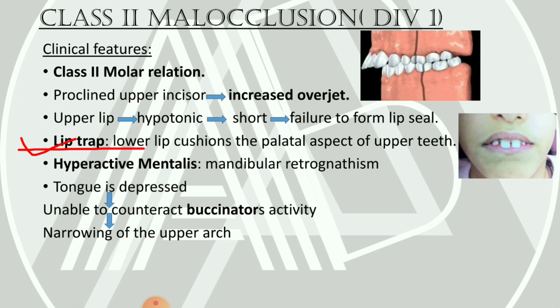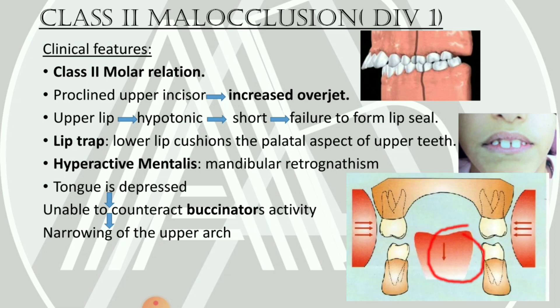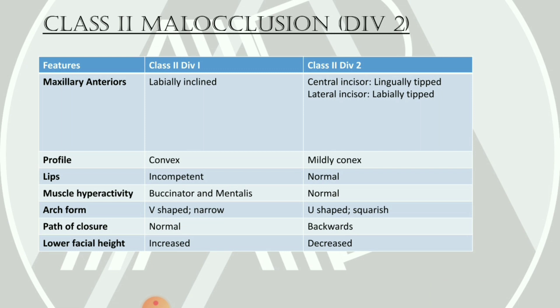In Class 2 Division 1, there is hyperactive mentalis muscle, which leads to mandibular retrognathism. Regarding the tongue, it is depressed and occupies a lower posture in the oral cavity. Because the tongue is in a lower posture, it fails to counteract buccinator activity. The buccinator muscle results in narrowing of the upper arch in the premolar and canine area, leading to the formation of a V-shaped upper arch.